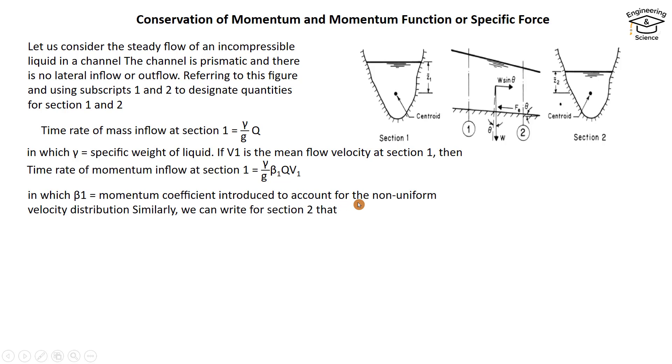Similarly for section 2, time rate of momentum outflow equals γ/g × β₂ × Q × V₂. The change of momentum or time rate of increase of momentum equals γ/g × Q × (β₂V₂ - β₁V₁).